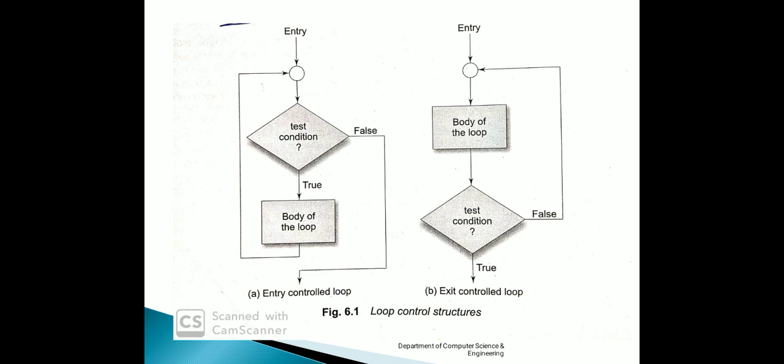In the previous class, we were discussing about entry control loop and exit control loop. In exit control loop, if the condition becomes false, then the body of the loop will be executed. Observe here carefully: if the condition becomes false, then only the body of the loop will be executed in the next pass. Otherwise, it will come out of the loop.